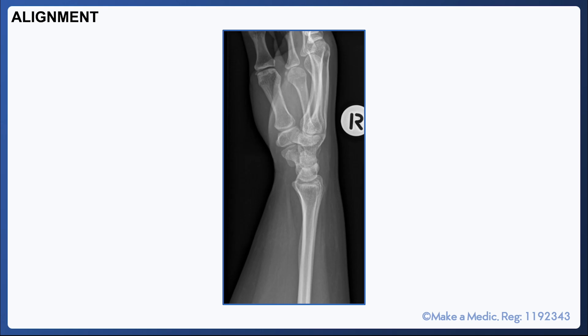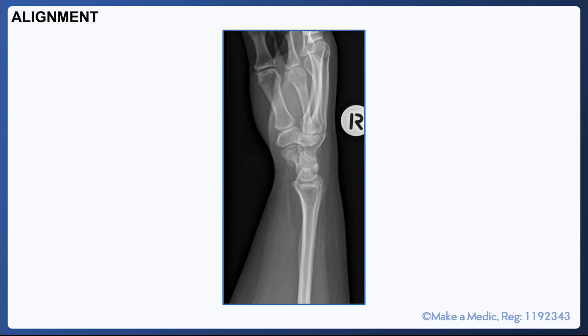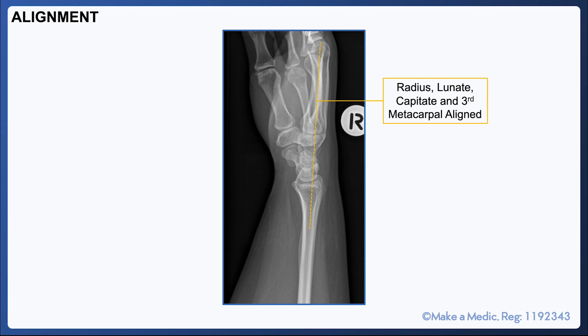On the lateral view, again there should be a smooth distal radial contour, and the radius, lunate, capitate, and third metacarpals should all be aligned.